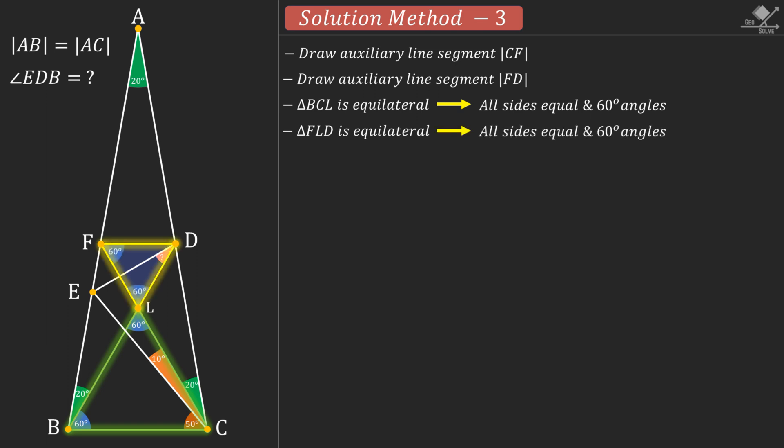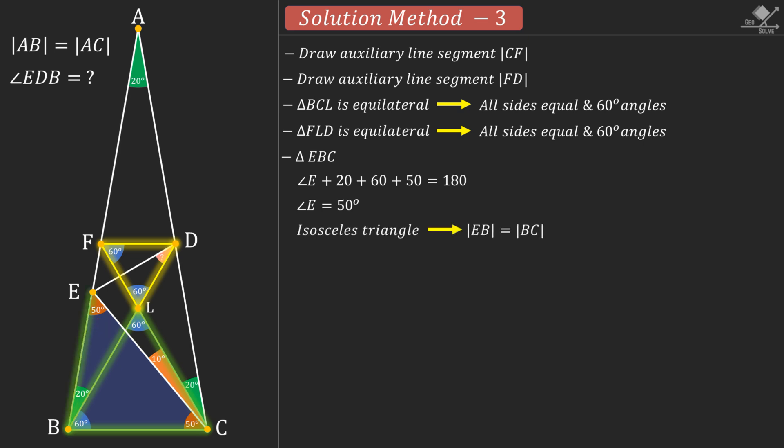Now, focus on this triangle. From internal angles, this angle will be 50 degrees. So this is an isosceles triangle, and line segment EB is equal to BC.